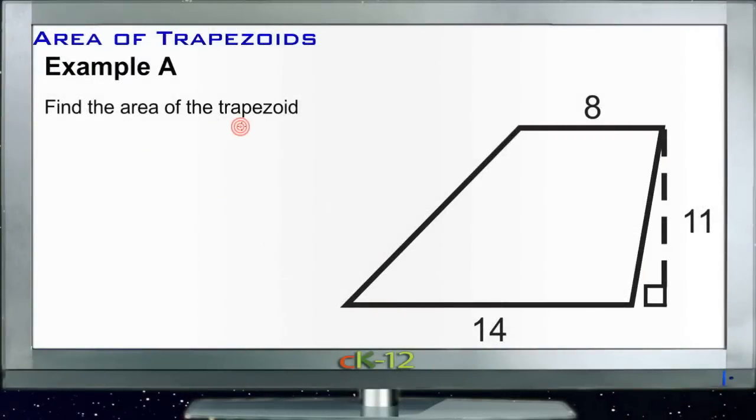Alright, Example A: find the area of the trapezoid. So here we have a trapezoid that has a height of 11, so 11 is going to be our h, and then base 1 is 8 units and base 2 is 14 units.